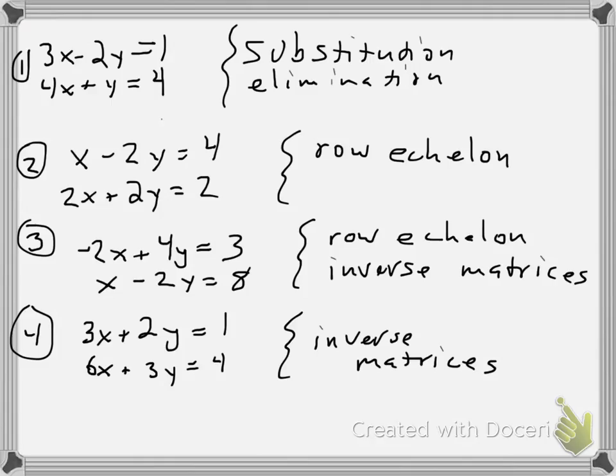So, I have 4 examples here. I'll try substitution and elimination on the first one, row echelon on the second one, on the third one, row echelon and inverse matrices. And on the last one, let's just start using inverse matrices.